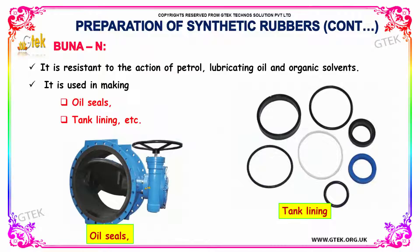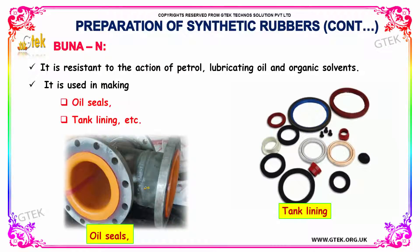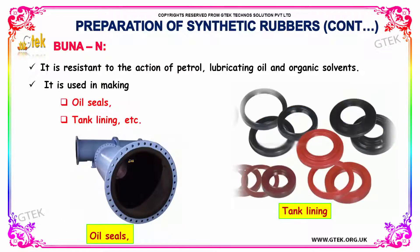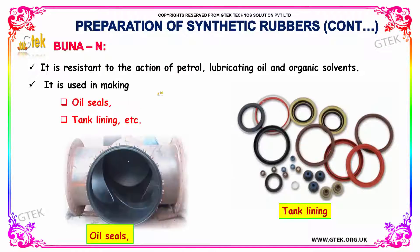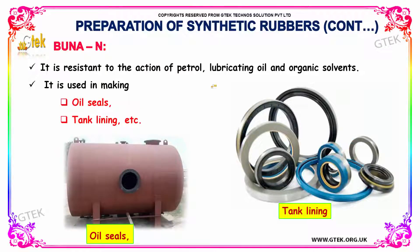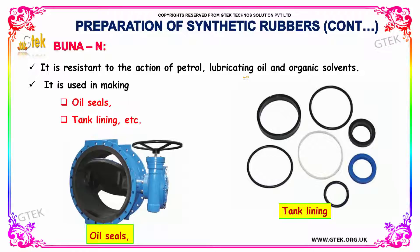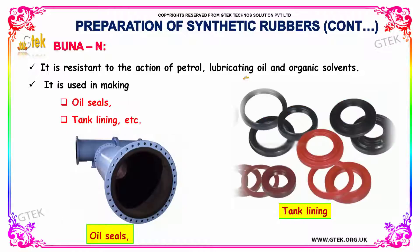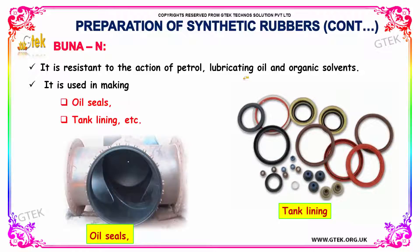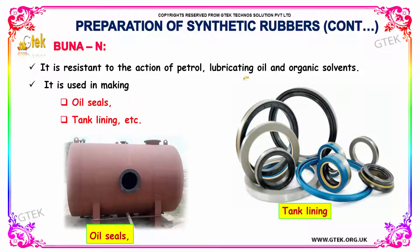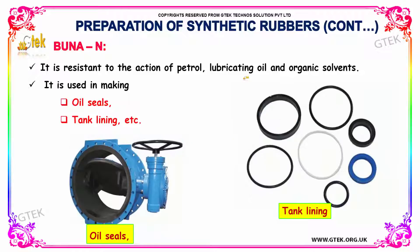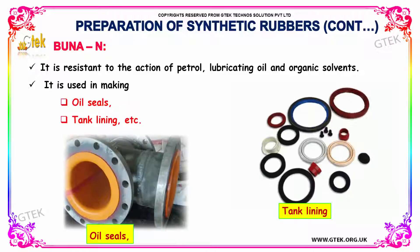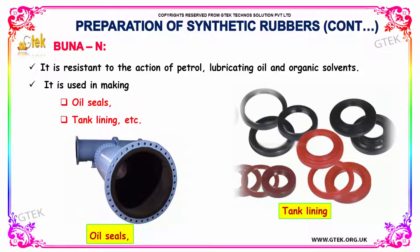Buna N is very resistant to the action of petrol, lubricating oil, and organic solvents. It is also generally used in the making of oil seals and tank lining.